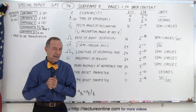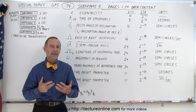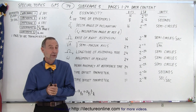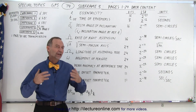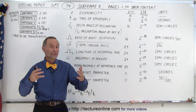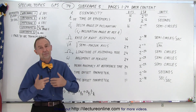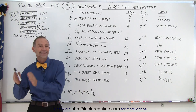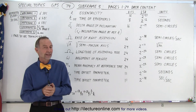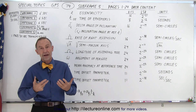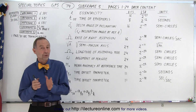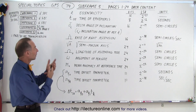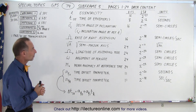Welcome to iLectra Online. Now let's take a look at the content of the almanac data contained in subframe 4 and 5. Subframe 5 contains the almanac data of the first 24 satellites, and then subframe 4 contains additional almanac data for the next eight satellites, for a total of 32 satellites. So we're able to keep track of the almanac data of 32 satellites if you have a receiver receiving the subframe data from the satellites.